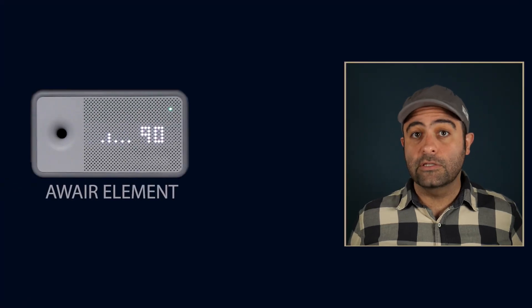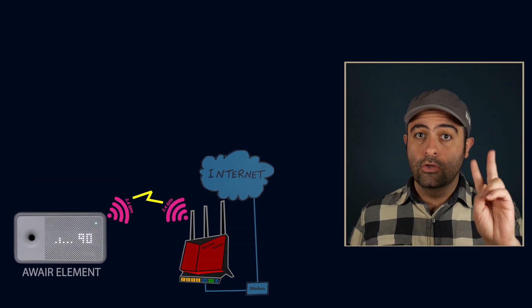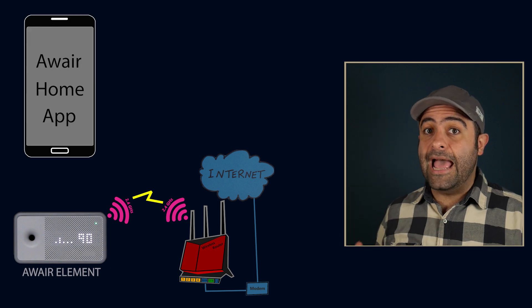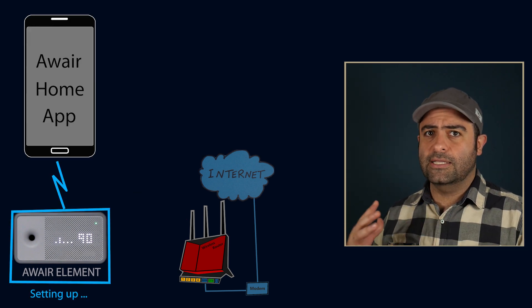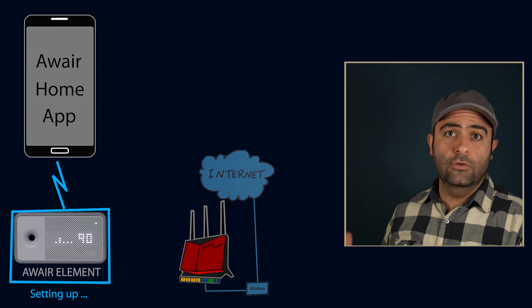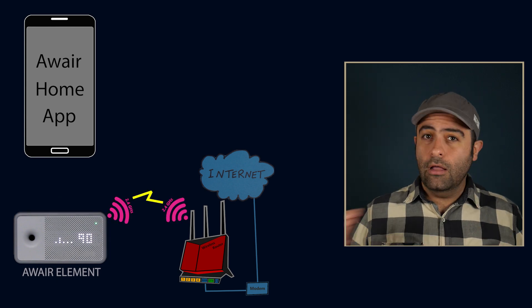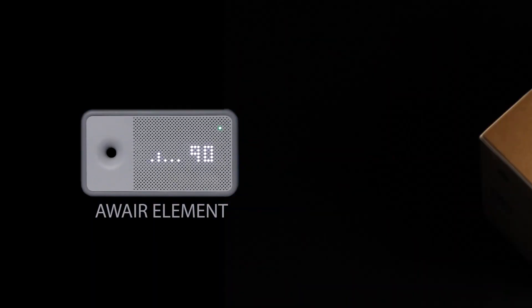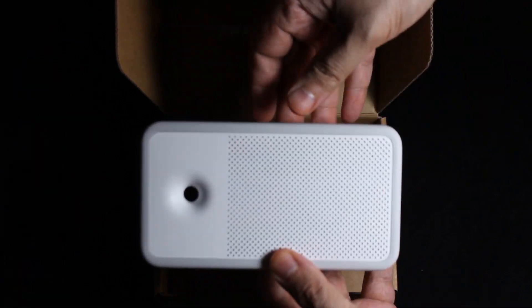The Aware Element uses 2.4 GHz Wi-Fi to connect to the network. There is of course an app called the Aware Home app, which you use to do the basic setup, including connecting the Aware Element to the network. But what exactly is the device itself? The Aware Element is an indoor air quality monitor for homes.